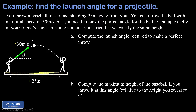We'll start by expressing the components of the launch velocity. Our horizontal component is going to be 30 times the cosine of the unknown launch angle theta, while our vertical component is 30 times the sine of the launch angle theta.